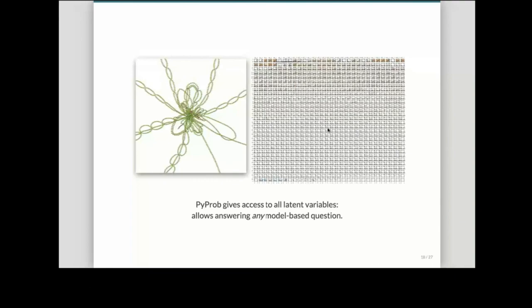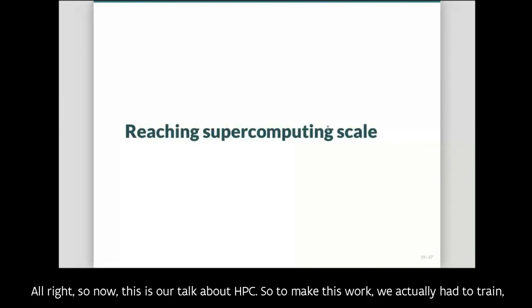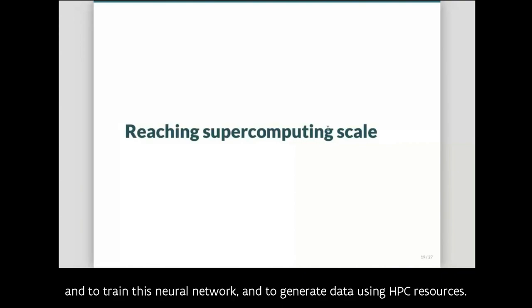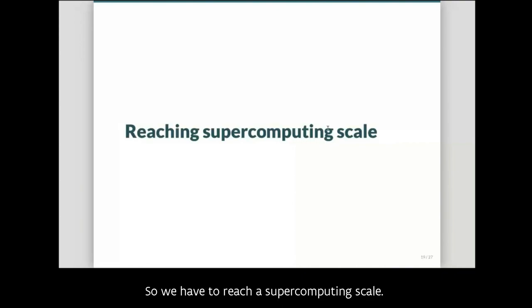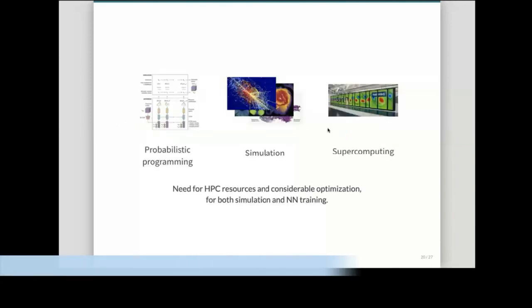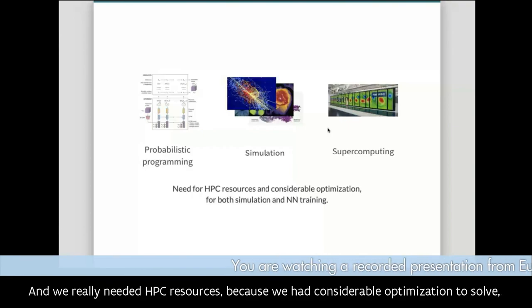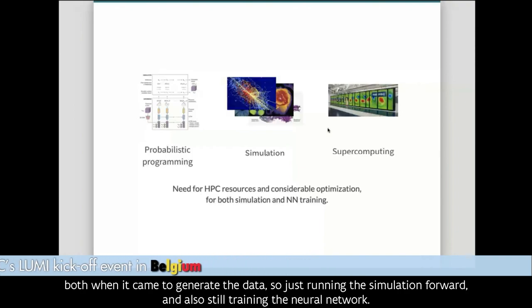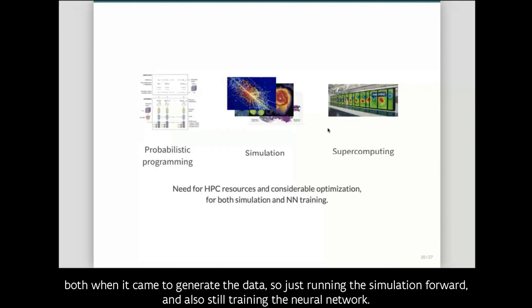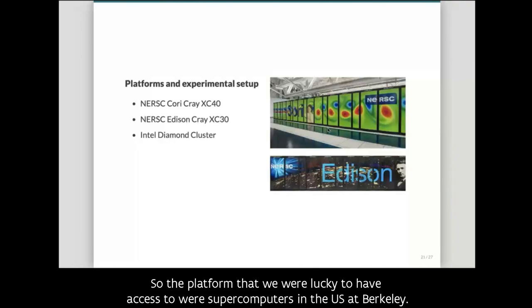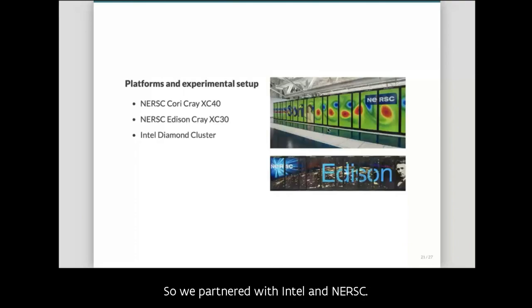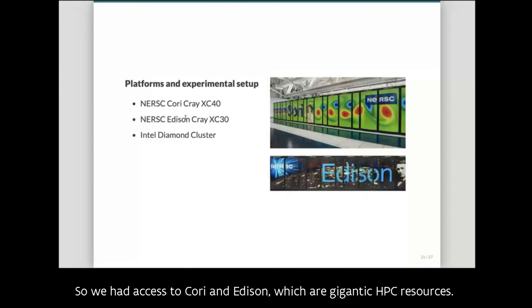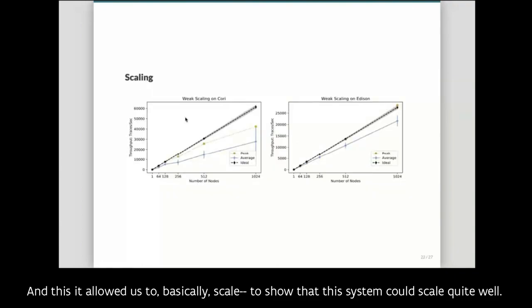This is also a talk about HPC. To make this work, we had to train the neural network and generate data using HPC resources — we had to reach supercomputing scale, bringing together probabilistic programming, simulation, and supercomputing. We needed HPC for considerable optimization, both for generating data by running the simulation forward and for training the neural network. We were fortunate to have access to supercomputers at Berkeley — we partnered with Intel and NERSC, with access to Cori and Edison.